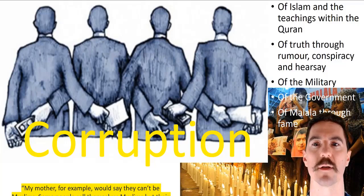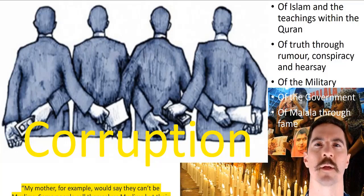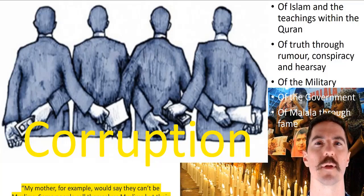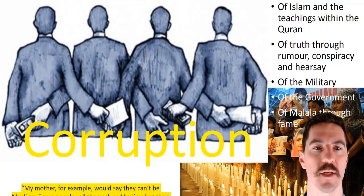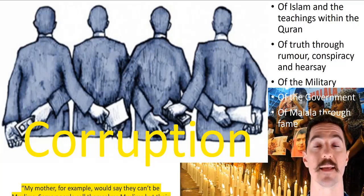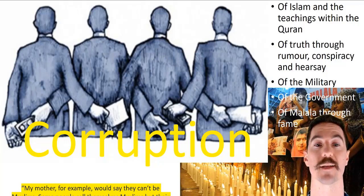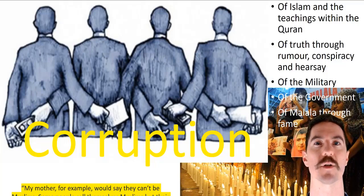Also the corruption of the military and the government — and more subtly, the corruption of Malala through her fame. From a Pakistani point of view, they view Malala as being corrupted, turned into less of a Pakistani citizen through her engagement with fame and the West. A quote to get you started is on page 238: 'My mother, for example, would say they can't be Muslims. Some people call themselves Muslims but their actions are not Islamic.' Go find that one, decide what color corruption is, and highlight that.